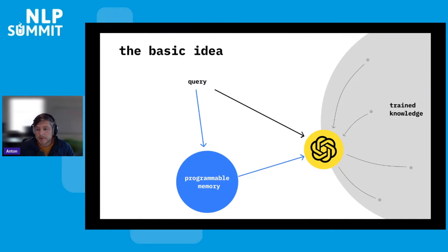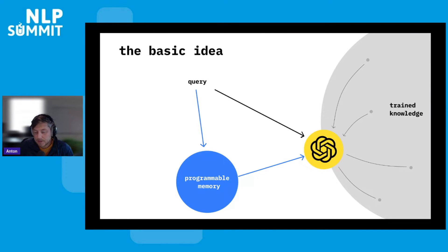The basic idea is essentially that you have some programmable memory store. Chroma is building memory for AI that you can send a query to, and relevant information will be retrieved and passed to the large language model along with the query. Then together with the knowledge that the model is already trained on, the model will be able to synthesize an answer to that query.